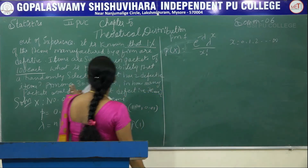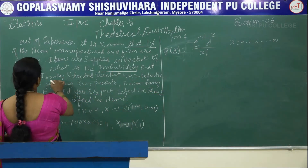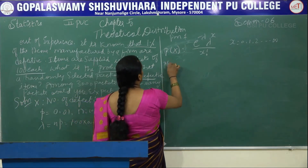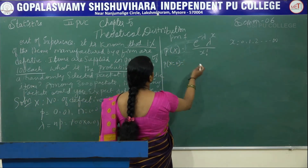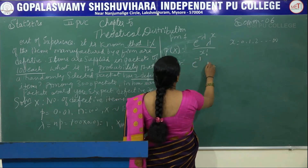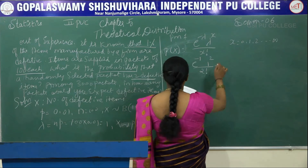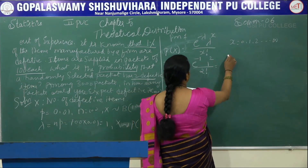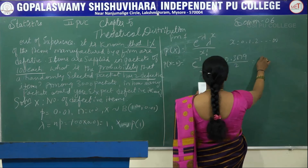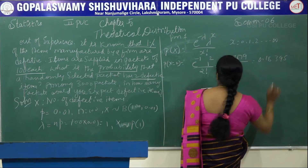First, we want to find the probability that a packet selected has two defectives, so P(X=2). P(X=2) equals e to the power minus 1 times 1 to the power 2 divided by 2 factorial, which is 0.3679 divided by 2, giving 0.18395.